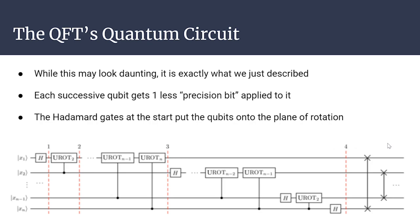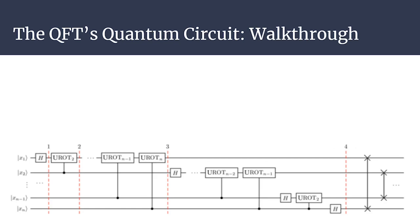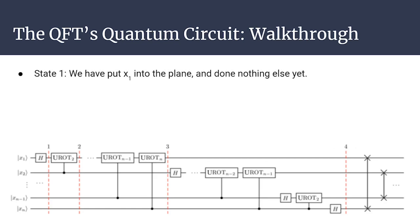The Hadamard gates at the start put qubits onto the plane of rotation. The U-rot effectively acts as a rotation: the plus state is 0 degrees and the minus state is 180 degrees, and since the minus state is the function of the 1 state, applying the Hadamard rotates the 1 state 180 degrees. Now let's go step by step. The lines drawn to black dots on the diagram represent controlled unitary rotations — the black dot is the controlling qubit and the U-rot symbol marks the qubit being rotated.